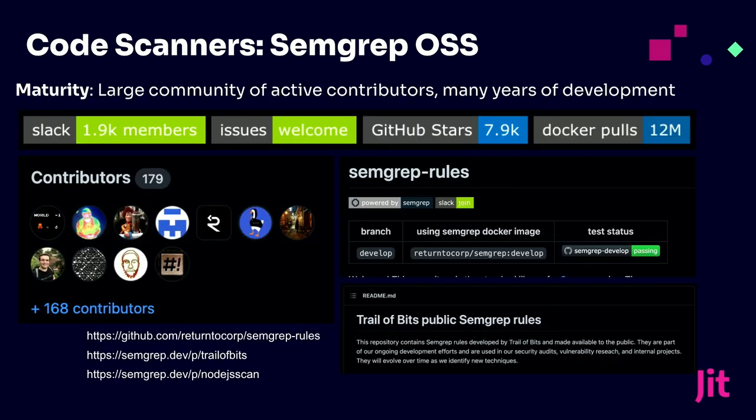Here's the maturity view — it's cool to look at how many users, the GitHub stars, the Docker pulls. It's kind of like the restaurant reviews. This gave us a lot of confidence that we like the way SEMGREP works and the community likes it as well. That helped us in choosing SEMGREP.